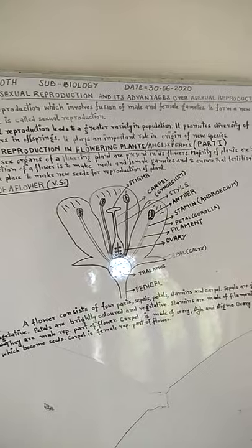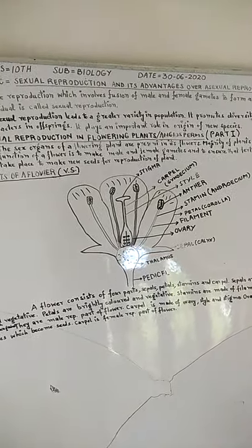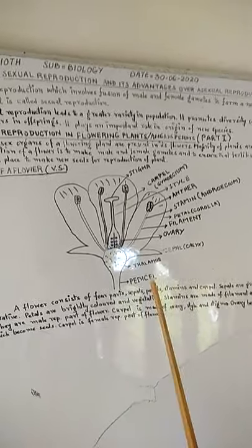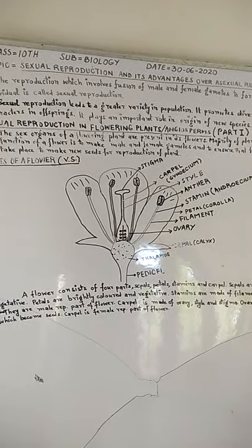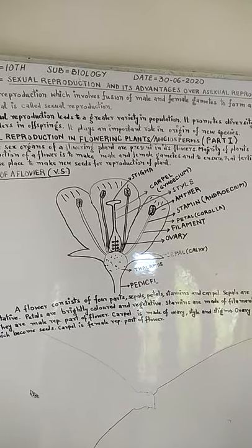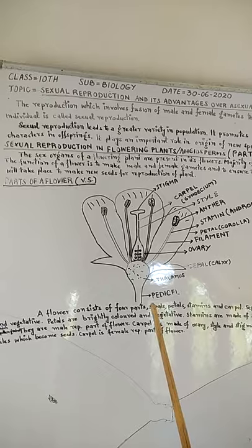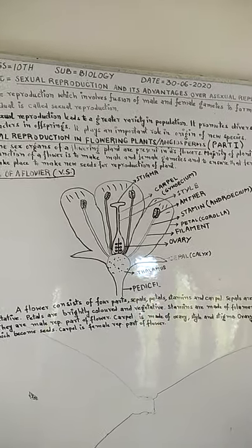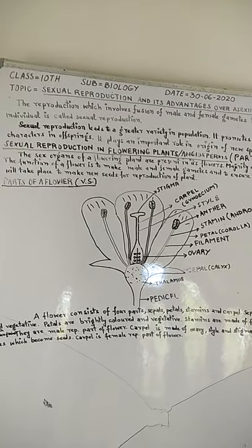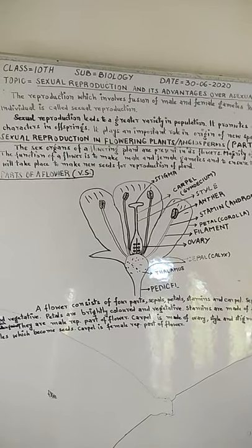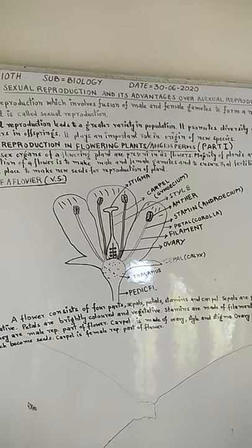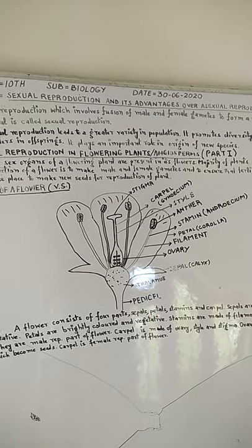Here I have drawn a diagram of a flower. Flower is the reproductive part of a plant. A flower has two types of structures: one is vegetative part and another is reproductive part. Here you see this is the pedicel, that is the stalk of the flower. The uppermost part of this pedicel is called thalamus, and it is enlarged.